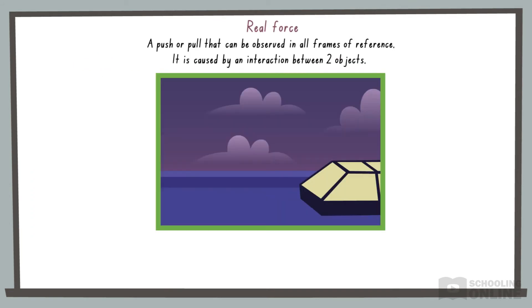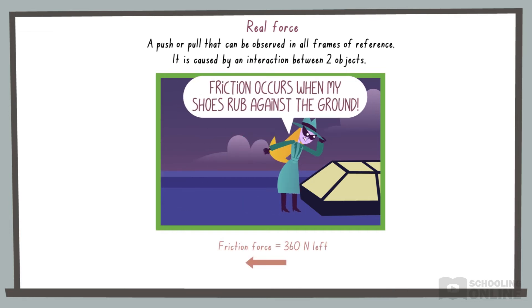A real force can be observed in all frames of reference. It is a push or pull that occurs when two objects interact. For example, a dynamic friction force occurs when two objects rub against each other.